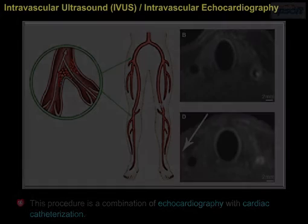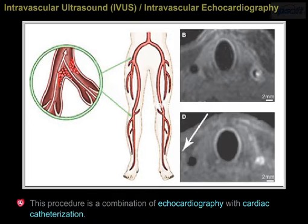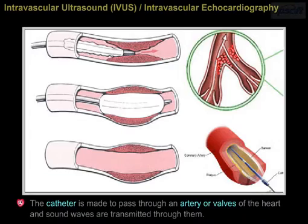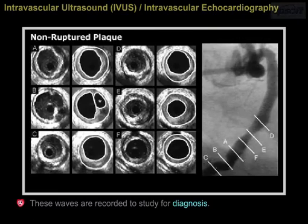Intravascular Ultrasound, IVUS, or Intravascular Echocardiography. This procedure is a combination of echocardiography with cardiac catheterization. The catheter is made to pass through an artery or valves of the heart, and sound waves are transmitted through them. These waves are recorded to study for diagnosis.